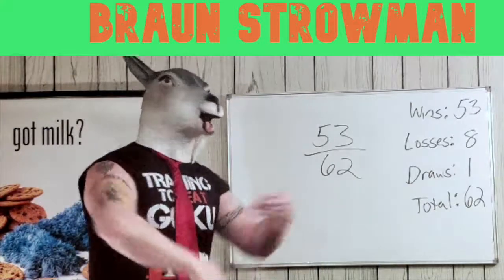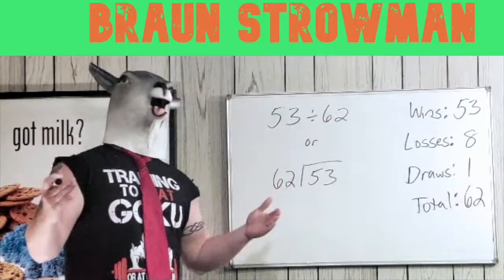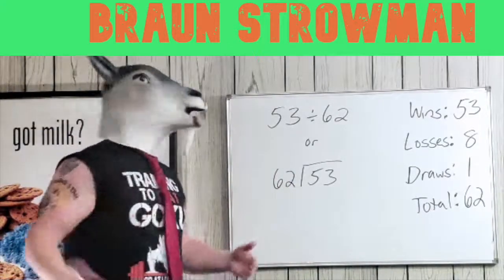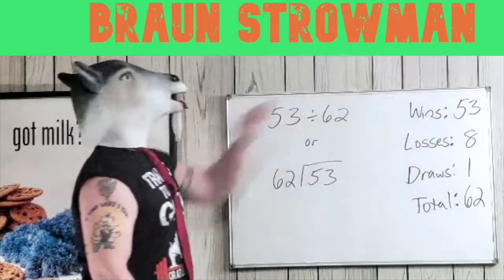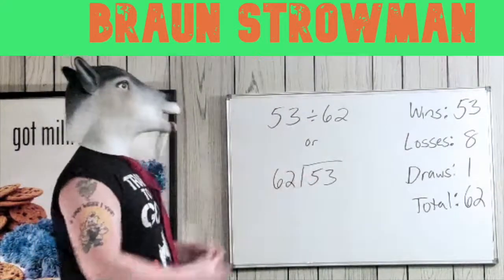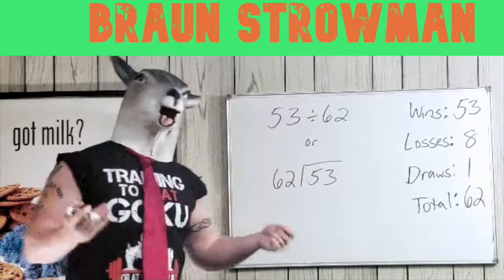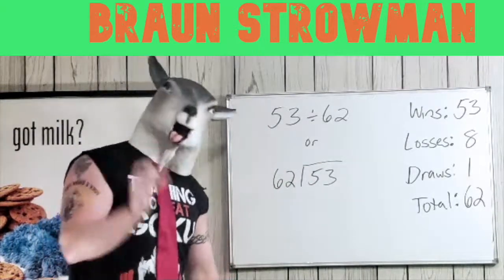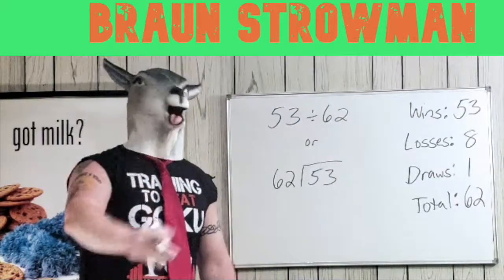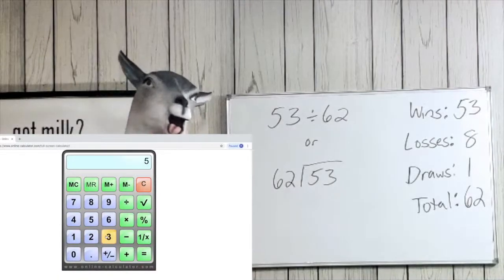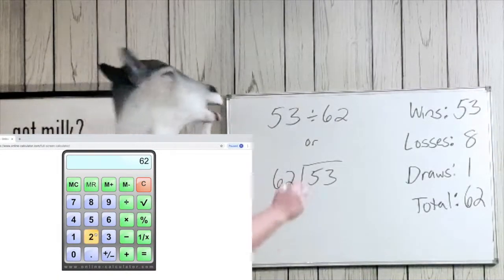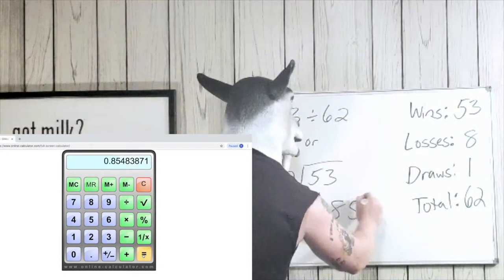Now we're just going to turn that into a division problem — because that's essentially what we're doing. We have 53 divided by 62. We're gonna punch it in the calculator. Remember, we want the win percentage, so put 53 in first, then divide by 62. And here's what we get: 0.855.